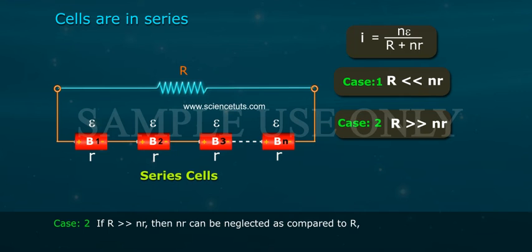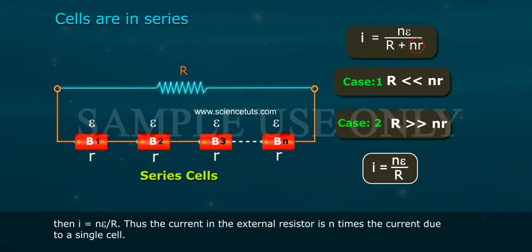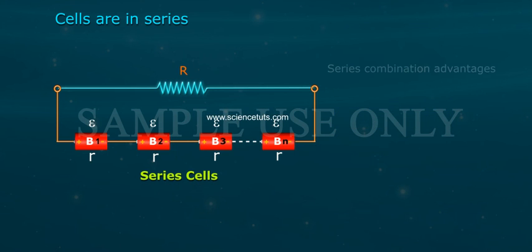Case 2. If R much greater than Nr, then Nr can be neglected as compared to capital R. Then I equals N epsilon by capital R. Thus, the current in the external resistor is N times the current due to a single cell. Series combination is advantageous.